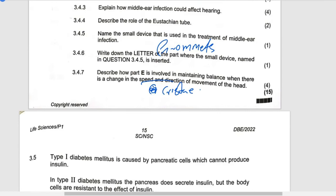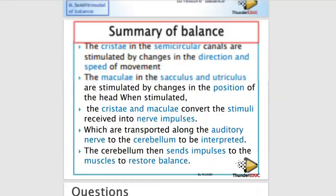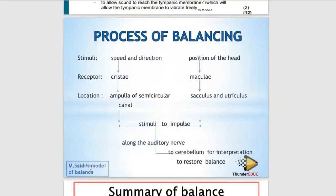Let me show you from our booklet. Here is the model of balance, where it says change in speed and direction. Cristae found in the ampulla of semicircular canal. The stimuli is converted into impulse sent along the auditory nerve to cerebrum for interpretation to restore balance. So basically, that's what you are supposed to explain. You are looking for this route. The paper was very easy, paper one.